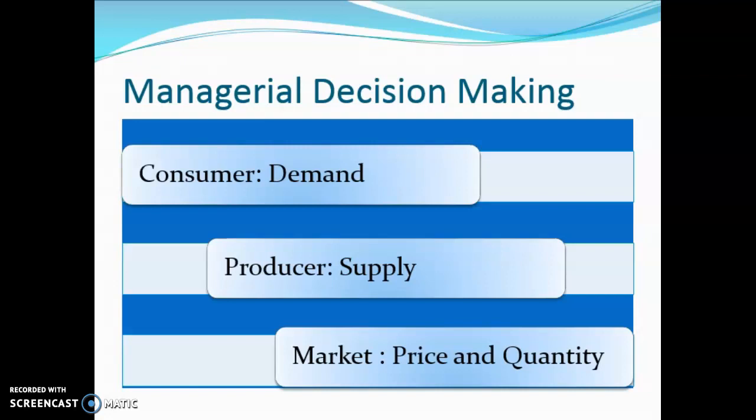The three stakeholders in managerial decision making are: the consumer, who provides the demand; the producer, who provides the supply; and the market, which is the platform where the consumer and the producer interact to decide on the equilibrium price and quantity. Depending on the type of market, various pricing decisions are arrived at, and accordingly managerial decisions are also taken.